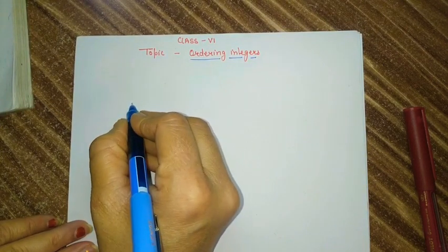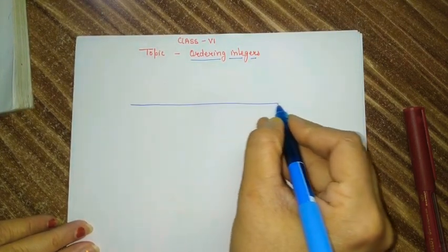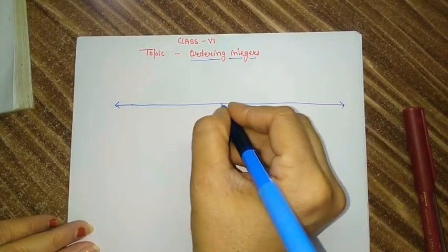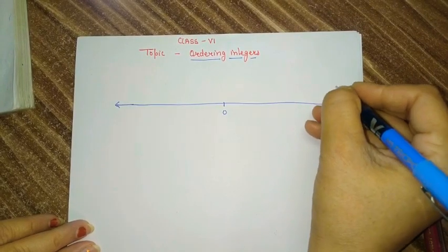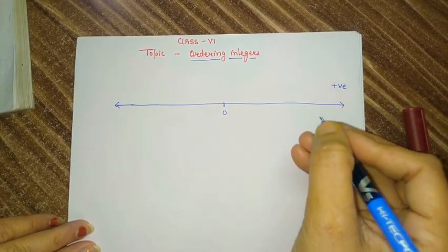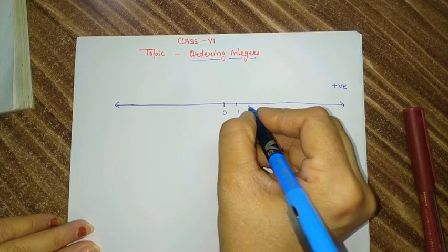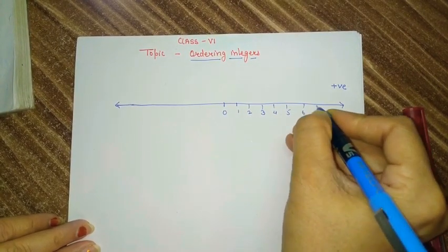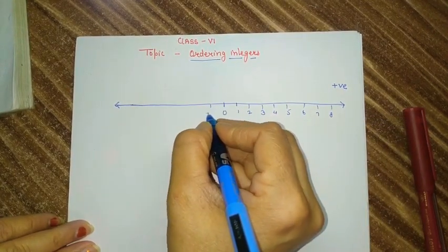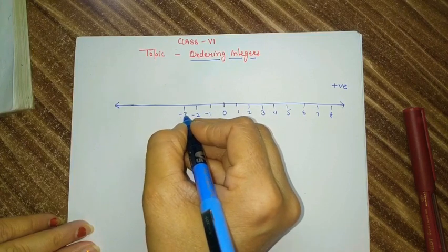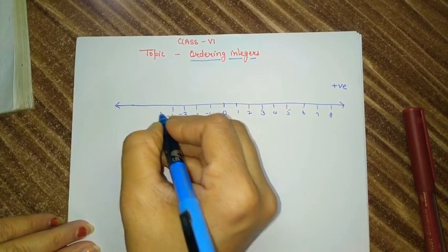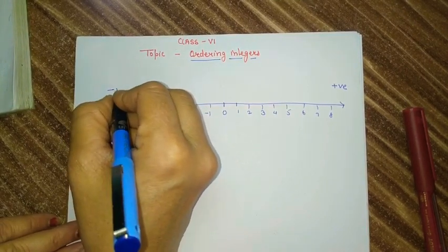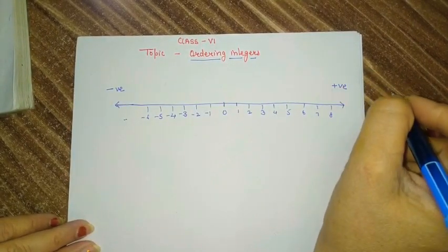I am going to explain this with the help of a number line. Since we represent the integers on a number line, on the right side of the number line we represent all the positive integers, and toward the left side we represent all the negative integers.